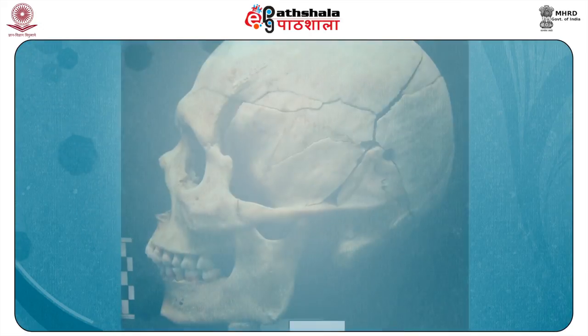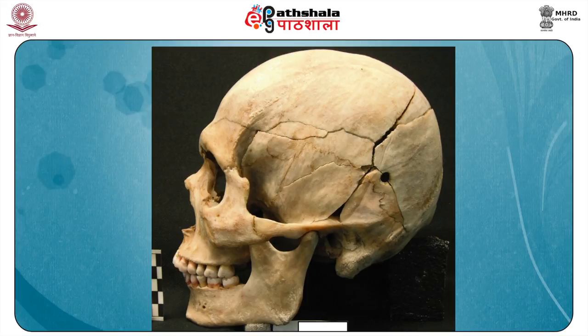In the skull, the wound of entry shows a punched-in hole in the outer table. The inner table is unsupported and a cone-shaped piece of bone is detached forming a crater larger than the hole on the outer table, showing beveling. Fissured fractures often radiate from the defect. At the point of exit, a punched-out opening is produced in the inner table and beveling is on the outer table. The wound is funnel-shaped with the funnel opening up in the direction the bullet is travelling in both entrance and exit wounds. The exit wound is larger due to deformity and tumbling of the bullet.